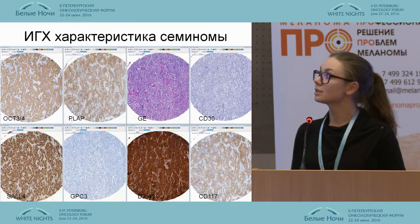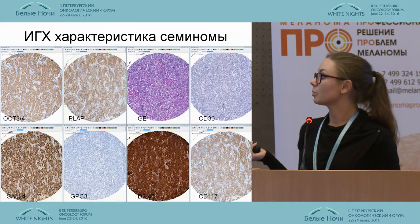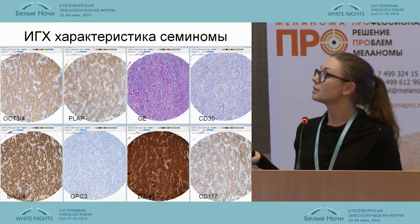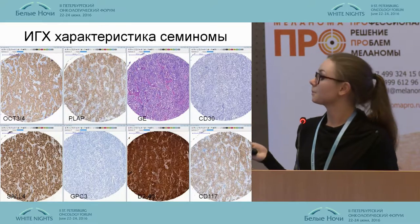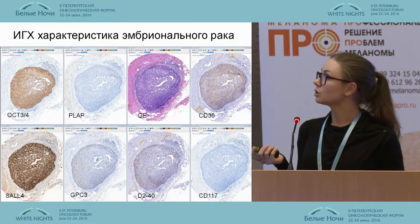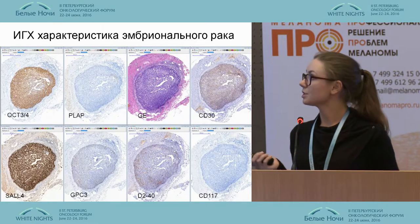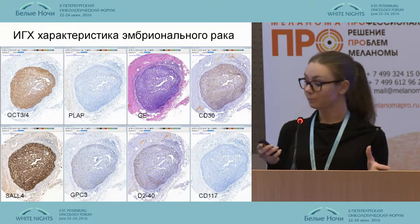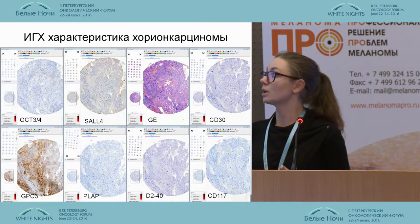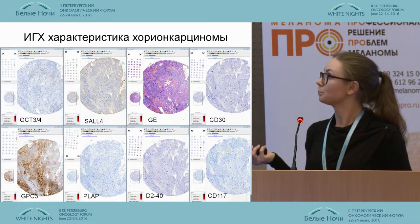Regarding IHC characteristics: seminomas are always positive for SOX4 and podoplanin, with variable coloring for PLAP, and negative for CD30. Embryonal cancer is always positive for CD34 and negative for podoplanin, with positive coloring for PLAP. Choriocarcinoma was stained in only one case and was positive for SOX4.